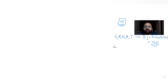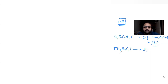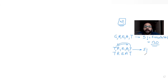Next example: instead of GREAT, consider the word TREAT — T, R, E, A, T. How many unique words can I form with these five letters? I can arrange them in 5! = 120 ways. But if I keep R, E, and A in the same position and swap the two T's, I still get the same word. So every word is repeated two times, meaning those 120 words are not all unique. We need to divide by 2!.